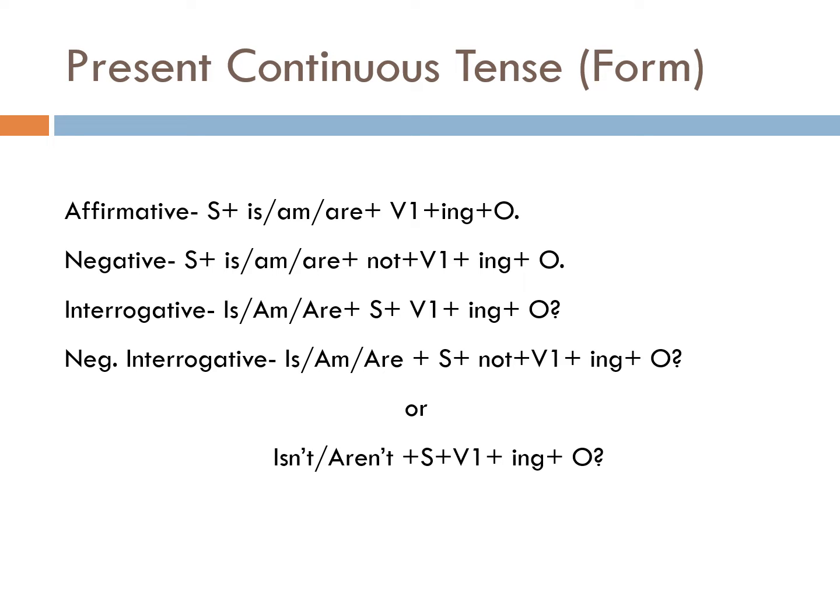Let's come on to the main topic, i.e. present continuous tense. First of all, the rules of present continuous tense. Number 1, affirmative sentence: Subject plus is/am/are plus first form of verb plus -ing plus object. Interrogative: Is/am/are plus subject plus first form of verb plus -ing plus object. Negative interrogative: Am not / isn't / aren't plus subject plus first form of verb plus -ing plus object.